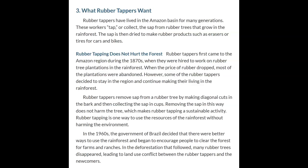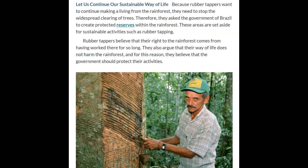Rubber tapping is one way to use the resources of the rainforest without harming the environment. In the 1960s, the government of Brazil began to encourage people to clear the forest for farms and ranches. In the deforestation that followed, many rubber trees disappeared, leading to land use conflict between the rubber tappers and newcomers. Because rubber tappers want to continue making a living from the rainforest, they asked the government to create protected reserves for sustainable activities such as rubber tapping. They argue that their way of life does not harm the rainforest and the government should protect it.